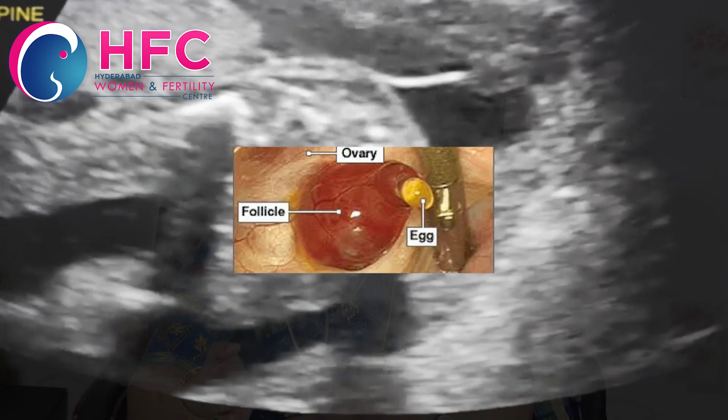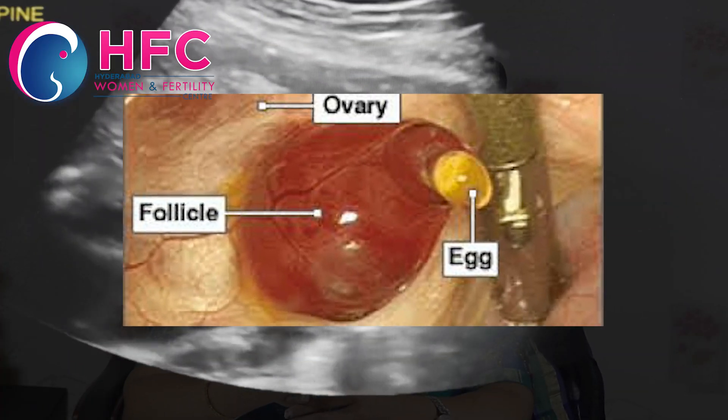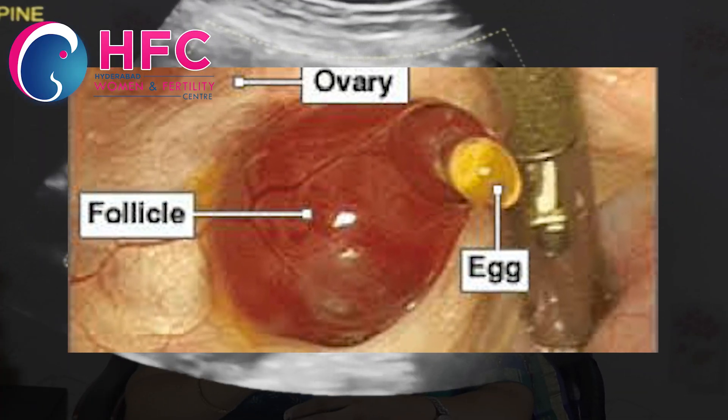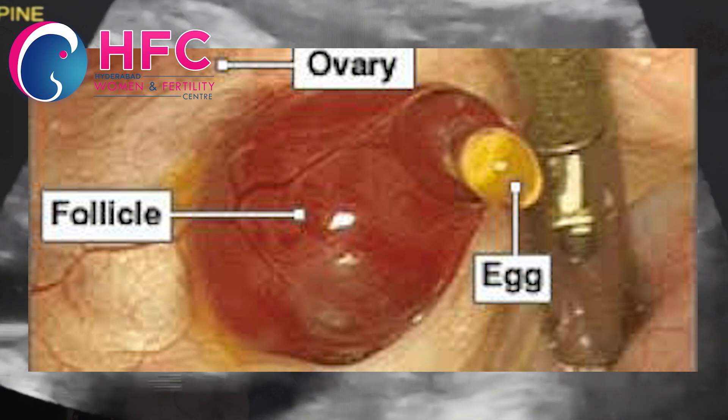There is an LH hormone surge. With an LH surge, usually within 12 to 36 hours there is a chance of egg release. Without follicle study, we don't know whether the egg is developing or being released.